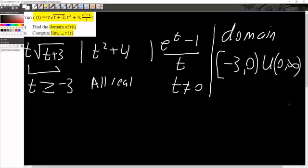So, it would be negative 3, we have a closed bracket, comma, 0, parentheses, union, parentheses, 0, comma, infinity. This would be our final answer for the domain.